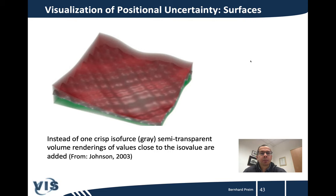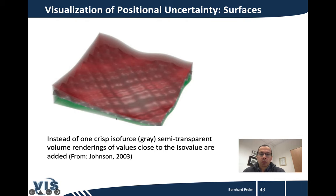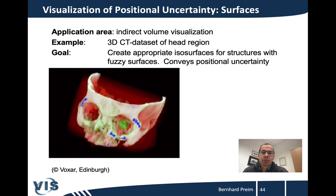A few more examples of positional uncertainty with respect to surface visualization. Normally you would generate one crisp ISO surface — which is also done here as the gray ISO surface. But in addition, a direct volume rendering is shown with a transfer function where opacity is only above zero close to this ISO value and thus close to the ISO surface. Here is another example using a CT dataset of the head region, where the precise position of some structures is uncertain. This is conveyed with what the authors call fuzzy surfaces: these appear semi-transparently, and this semi-transparent region is thicker or thinner depending on the amount of uncertainty.